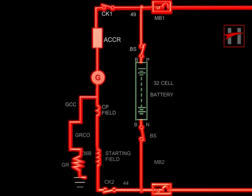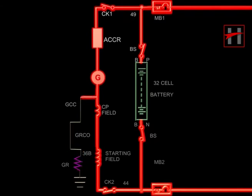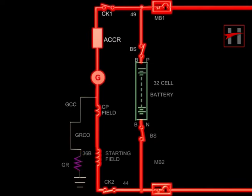In case of DC-DC locomotives, during LB ground fault, the current flows through GCC, GRCO, cable 36B, GR coil, and is earthed.